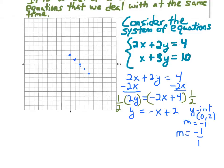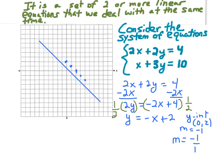Let me go ahead and graph that line. My y-intercept is (0, 2), right there. Then I go down 1 over 1, because my slope is negative 1 — rise over run. I do that as many times as I need to, so I have plenty of points to draw my line with. I draw a nice straight line and put arrows on the ends.